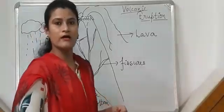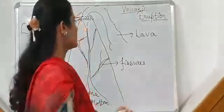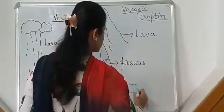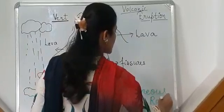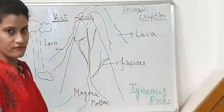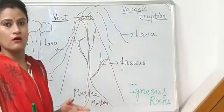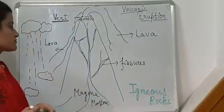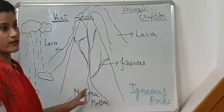Okay students, now I would like to tell you about the volcanic eruption and how igneous rock is formed. I'm going to tell you about the varieties and different kinds of rocks and their cycle — the rock cycle. For that you need to know what igneous rock is and how it is formed, so we have to understand the volcanic eruption.